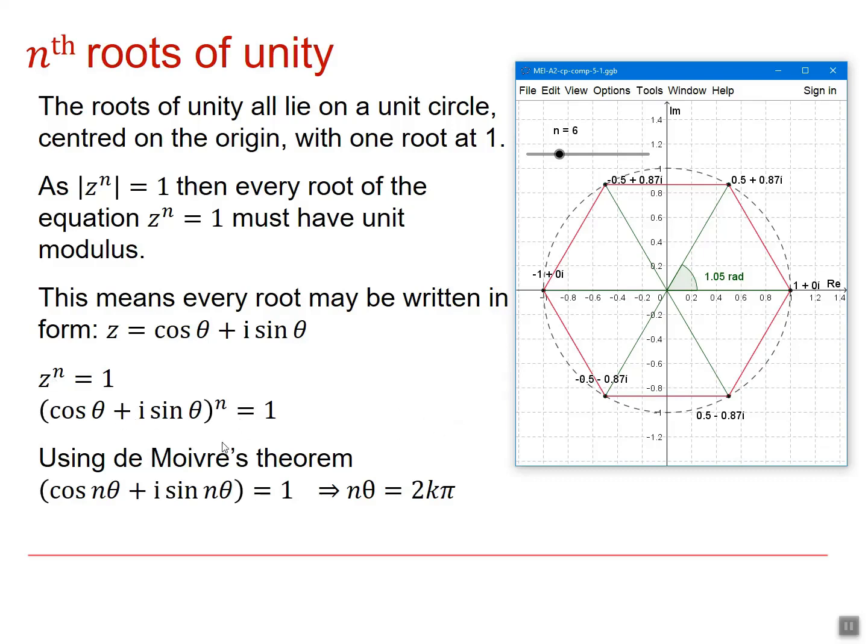So if z to the n equals 1, that means that cos theta plus i sine theta to the n equals 1. And using De Moivre's theorem, that gives us that cos n theta plus i sine n theta is equal to 1. And that tells us that n theta must be 2k pi.